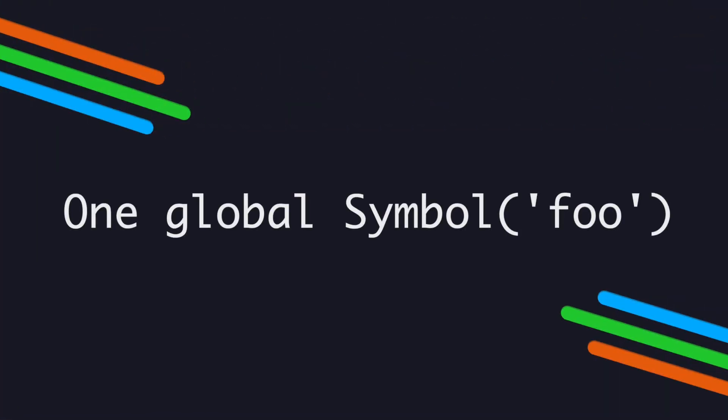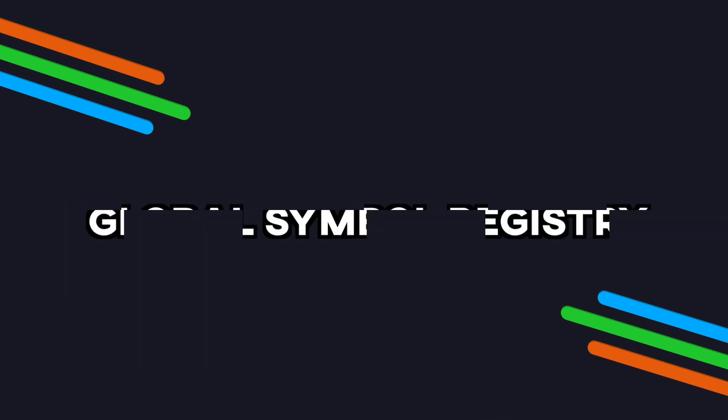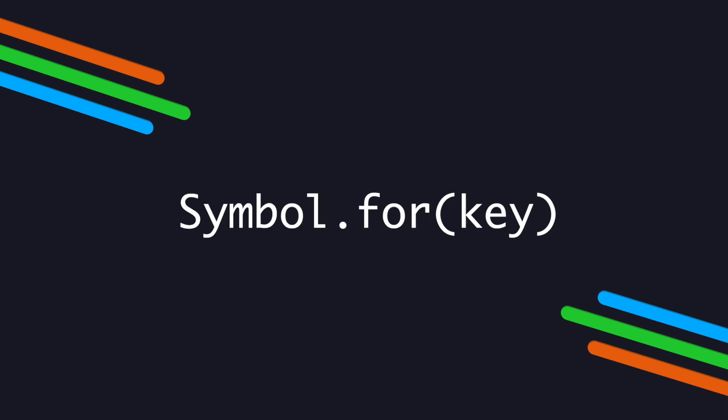But let's say that you want to keep track of one instance of a Symbol — like if you provide a description into a Symbol function, every time you call for that Symbol with that description, you only get that one Symbol. In JavaScript, there's something called the Global Symbol Registry that keeps track of all created Symbols on a global level. One function in particular, Symbol.for, provides the global Symbol associated with the provided description key.